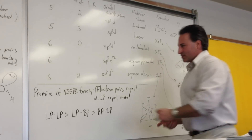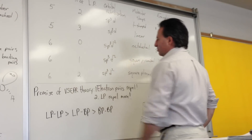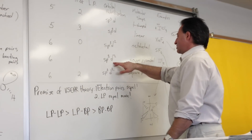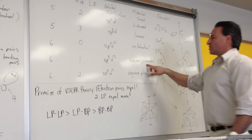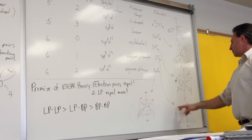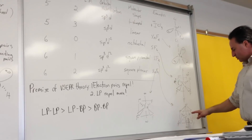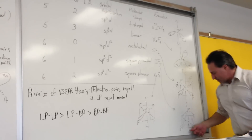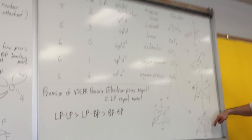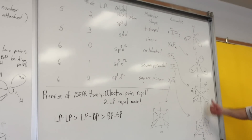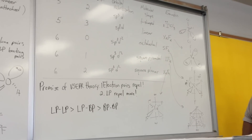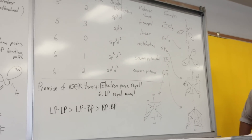If you have six things attached to a central atom with one lone pair, it's still SP3D2 hybridized, and now you call it square pyramidal. Iodine pentafluoride has a square pyramidal shape — the lone pair juts below, you have a plane of four fluorine atoms and one fluorine atom sticking up, giving the geometry of a square-based pyramid.